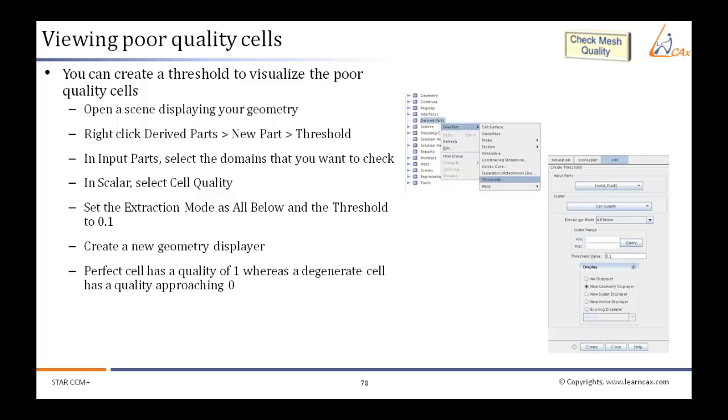In Scalar, select Cell Quality. Set the extraction mode as All Below and the threshold value.